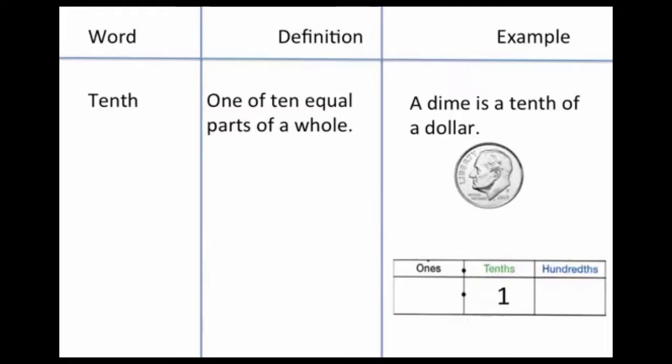The first word I want to talk about is tenth. A tenth is one of ten equal parts of a whole. A dime is a tenth of a dollar. And if you look on the place value chart in the bottom right, you'll see that tenths are just to the right of the decimal. You can pause the video to get down your notes.